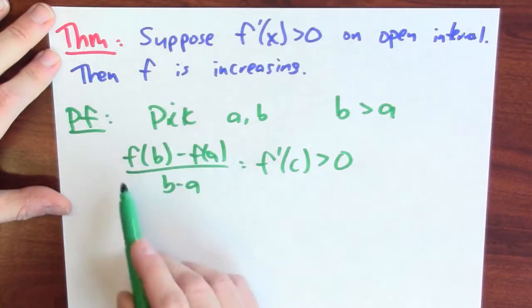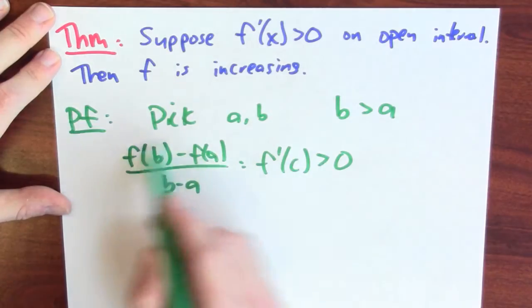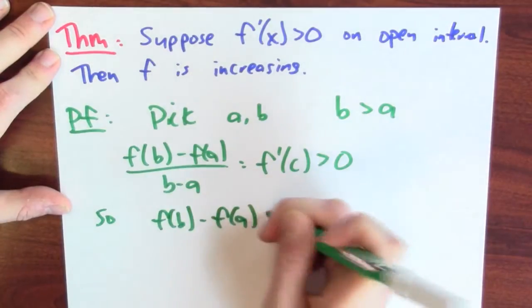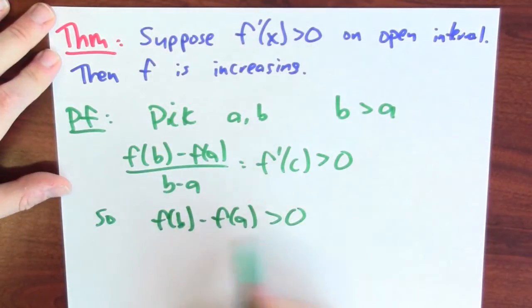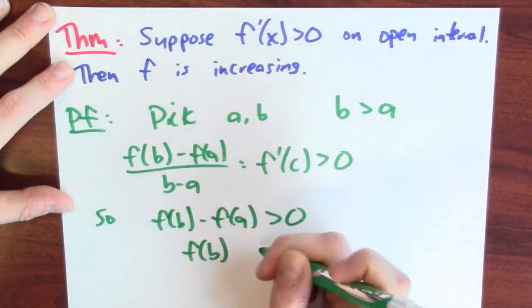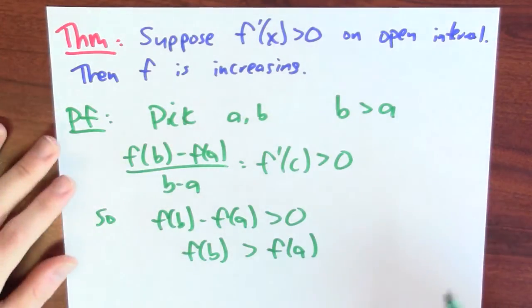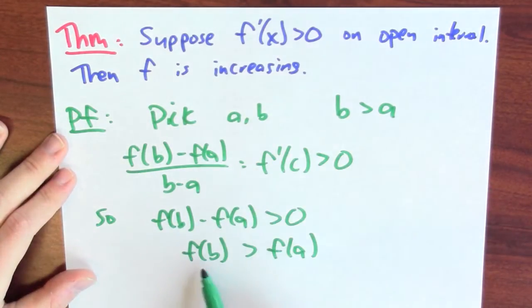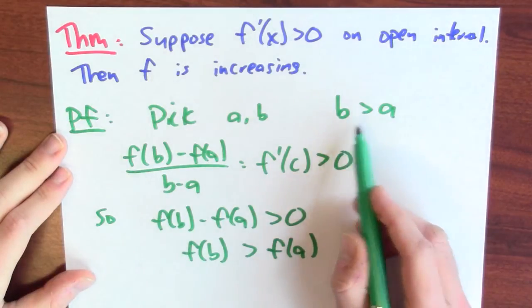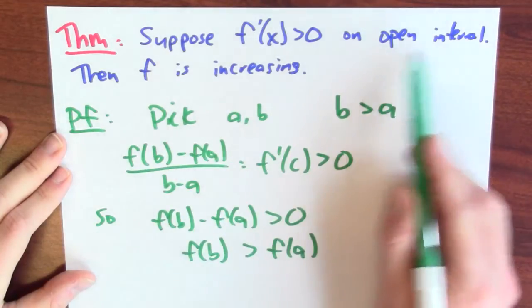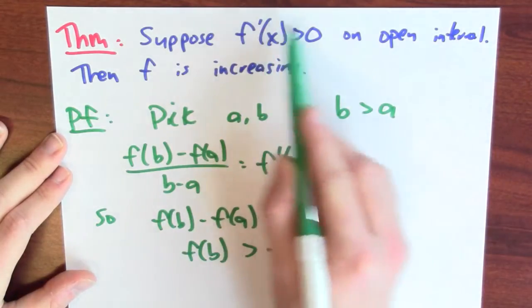So I've got a mystery number divided by a positive number that is positive, which means F(B) minus F(A) is positive. If I add F(A) to both sides, I get that F(B) is bigger than F(A). If F sends bigger inputs to bigger outputs, then F is increasing — increasing means a bigger input is sent to a bigger output. So if B is greater than A, then F(B) is bigger than F(A), and this argument works for any A and B in the open interval on which the derivative is positive.